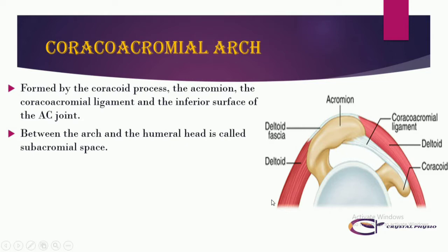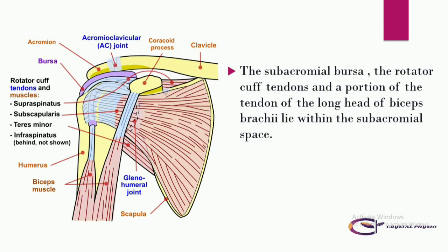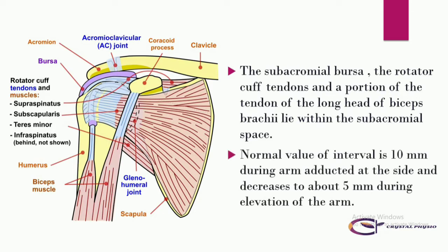As you can see in this picture, the coracoacromial arch, the subacromial bursa, the rotator cuff tendons, and a portion of the tendon of the long head of the biceps brachii all lie within the subacromial space. The normal interval value is 10 mm with the arm adducted at the side, and decreases to about 5 mm during elevation of the arm.